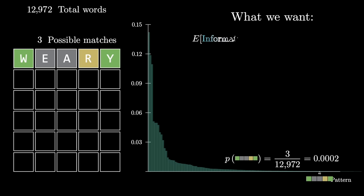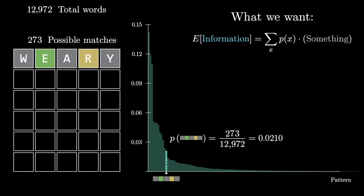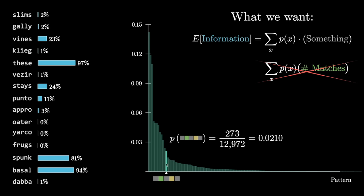So to judge how good this word is overall, we want some kind of measure of the expected amount of information that you're going to get from this distribution. If we go through each pattern and we multiply its probability of occurring times something that measures how informative it is, that can maybe give us an objective score. Now your first instinct for what that something should be might be the number of matches. You want a lower average number of matches. But instead, I'd like to use a more universal measurement that we often ascribe to information, and one that will be more flexible once we have a different probability assigned to each of these 13,000 words for whether or not they're actually the answer.